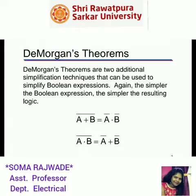De Morgan's theorems are two additional simplification techniques that can be used to simplify Boolean expressions. The laws are: (a + b) bar equals a bar dot b bar, and (a dot b) bar equals a bar plus b bar.